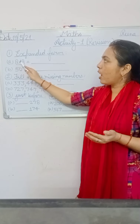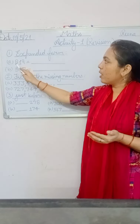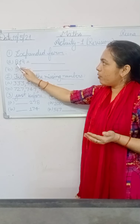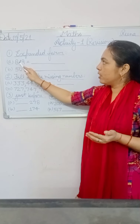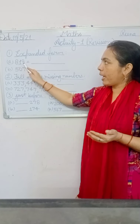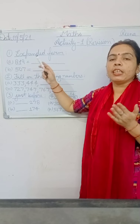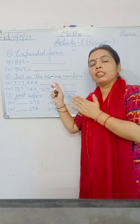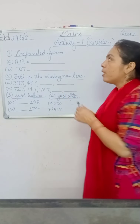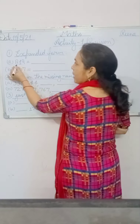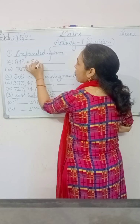We have the hundreds place. Now we read our number: eight hundred nineteen — 819. Eight is in hundreds place, so write eight hundred.